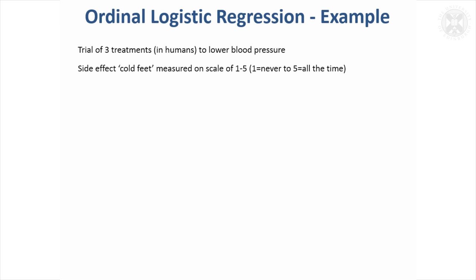This was a trial of three treatments to lower blood pressure. A side effect measured in the trial was whether patients had cold feet. It was thought the treatments could affect circulation and give them cold feet. Patients were asked to rate this on a scale from never to all of the time, rated on a scale labeled one to five—an ordered scale.